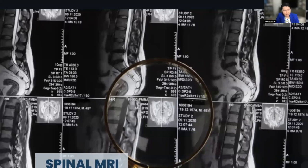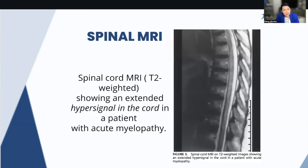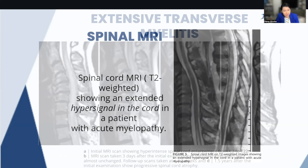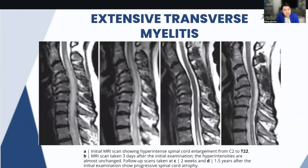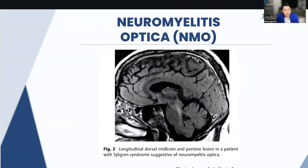Spinal MRIs are ordered to evaluate spinal cord involvement. They can show hyperintensities in the cervical area — 82% of patients will have that finding — or extended lesions in cases of acute myelopathy. This is an MRI of a patient with hyper-signal in the cord suggestive of acute myelopathy, and another from a patient with extensive transverse myelitis. We also see cases of neuromyelitis optica in patients with Sjögren, with involvement of the dorsal midbrain and pontine lesions.